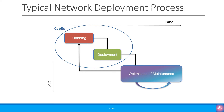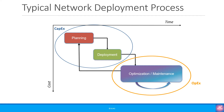The planning and deployment phases come under Capital Expenditure or CapEx. CapEx are funds used by a company to acquire, upgrade, and maintain physical assets such as property, industrial buildings, and equipment. CapEx is used to undertake new projects or upgrades by the MNO. Optimization and maintenance come under Operational Expenditure or OPEX — an ongoing cost for running a network including employee wages, electricity bills, and repairs. We recently made a tutorial explaining CapEx, OPEX, and TCO of a mobile network. Please check it out if you haven't already.